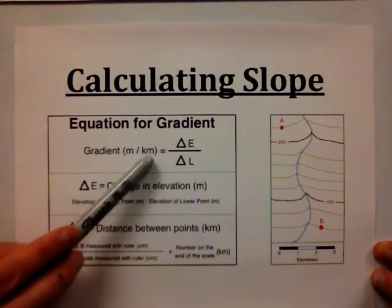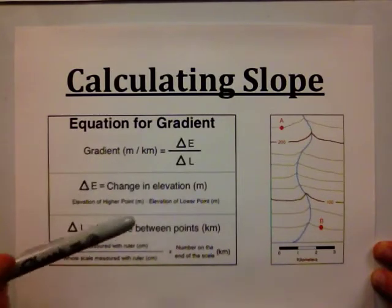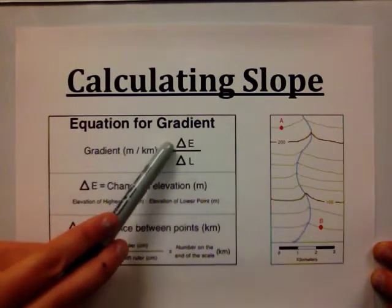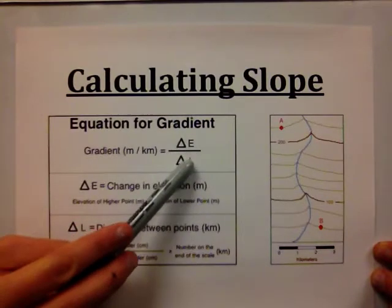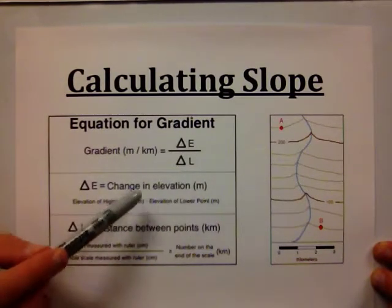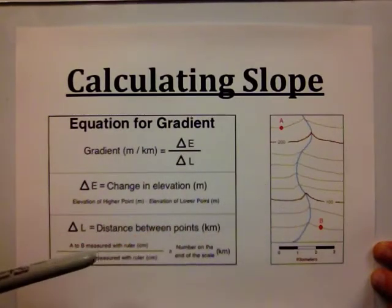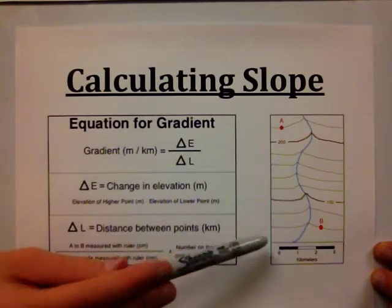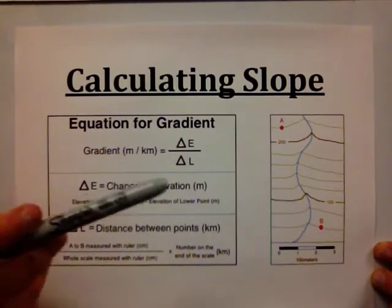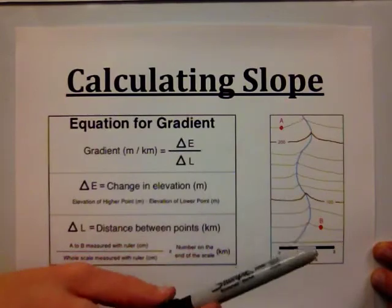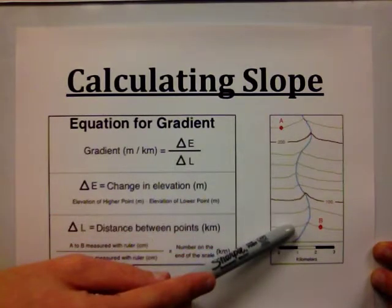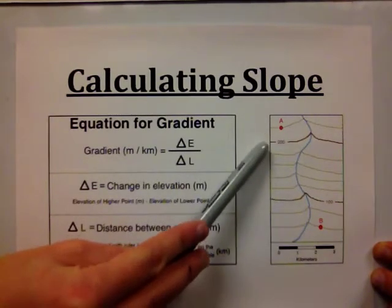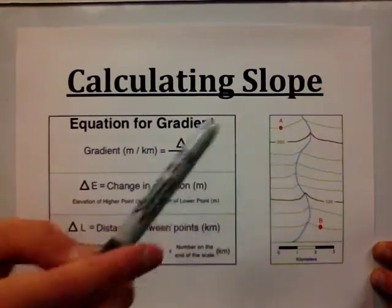Make sure you're in the same system of units. Gradient equals delta E over delta L, where the triangle symbol means 'change.' Delta E is the change in elevation and delta L is the distance between points — the change of location laterally, the distance between points A and B. We are not given the contour interval on this map, but we can figure out the elevation change between each line based on the index contour lines.